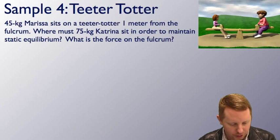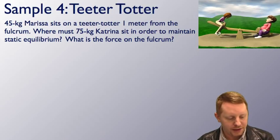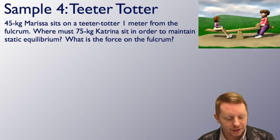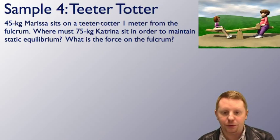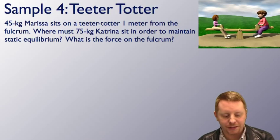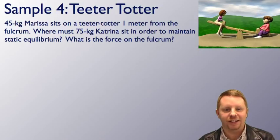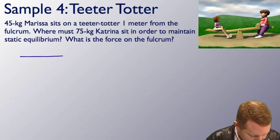Let's take a look at one more. 45 kg Marissa sits on a teeter-totter one meter from the fulcrum. Where must 75 kg Katrina on the right sit in order to maintain static equilibrium? And what is the force on the fulcrum? First thing we have to do is we have to assume that the teeter-totter is massless, since it doesn't give us the mass of the teeter-totter. And let's draw a little diagram here.